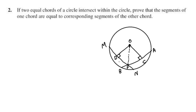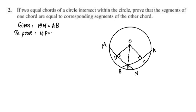We will prove that DP is equal to CP. Then we will prove that MP is equal to AP. And we will prove that PN is equal to PB — that is, the corresponding segments of the two chords are equal.